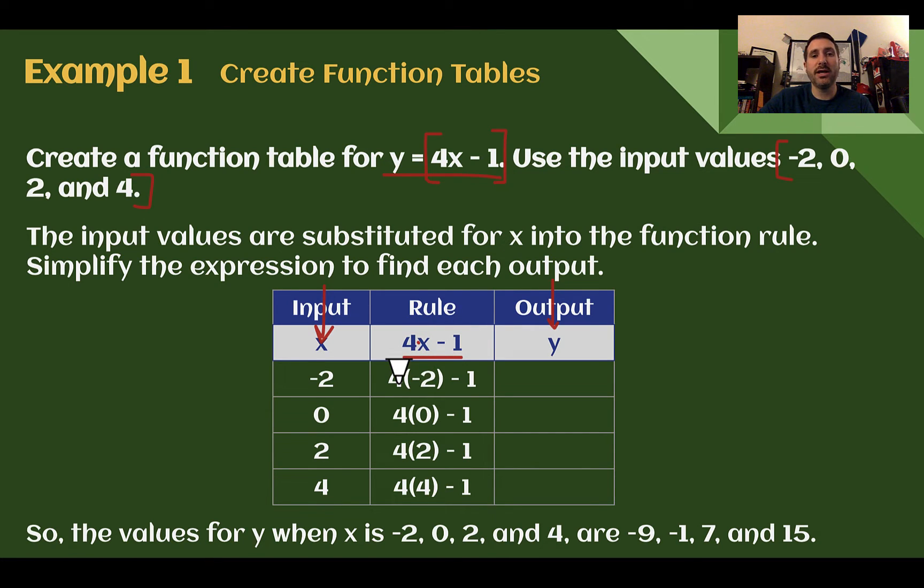So negative 2 times 4 is negative 8, 1 less than that is negative 9. If I substitute 0, 0 times 4 is 0, minus 1, negative 1. 2 times 4 is 8, minus 1 is 7. 4 times 4 is 16, minus 1 is 15. So when I take these inputs here, plug them in through the rule, I get these outputs here. And if we think back to our last lesson, we almost have a mapping diagram by taking our input, going through our rule to get our output.